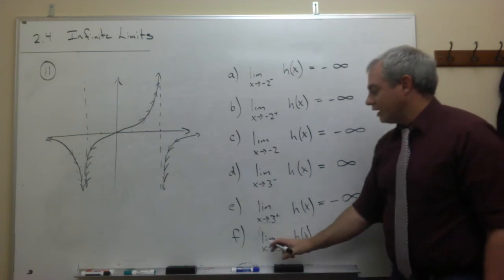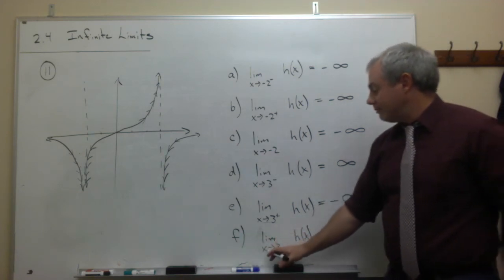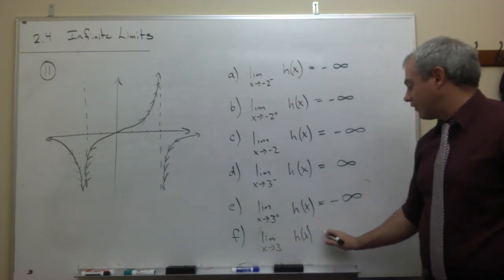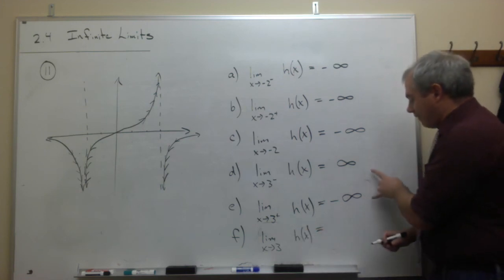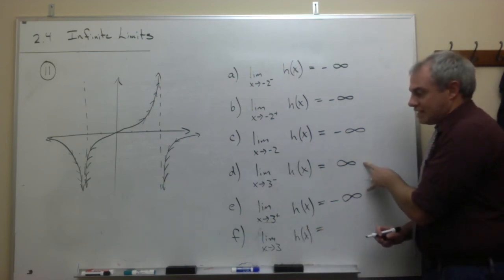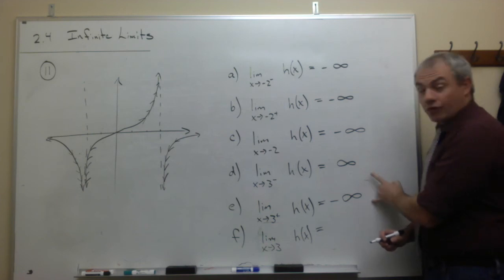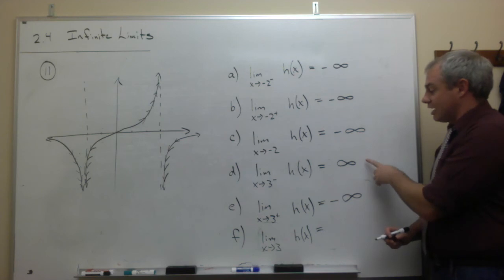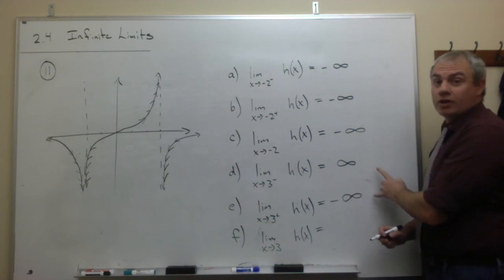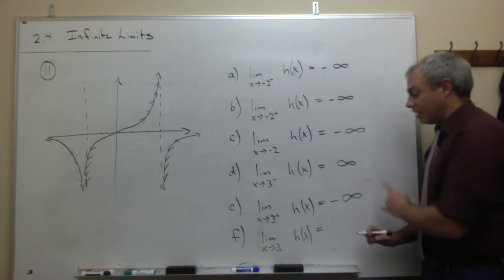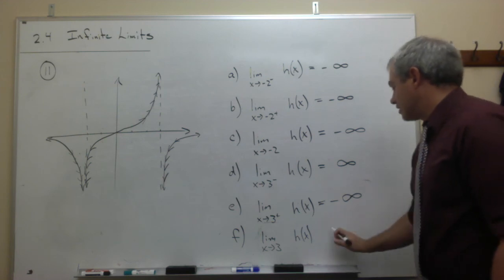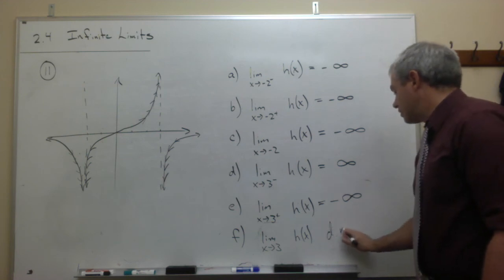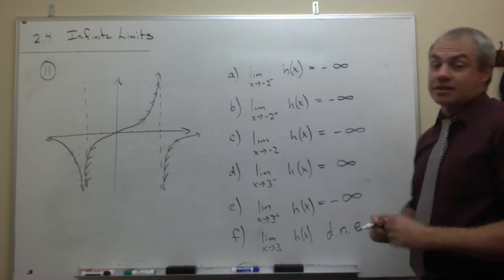Finally, part F asks what's the limit as x goes to 3 of h of x. That limit exists if the two values from D and E — the left-hand limit and the right-hand limit — are exactly the same. In this case, they're not the same: one's positive infinity and one's negative infinity. So we would say this limit does not exist.